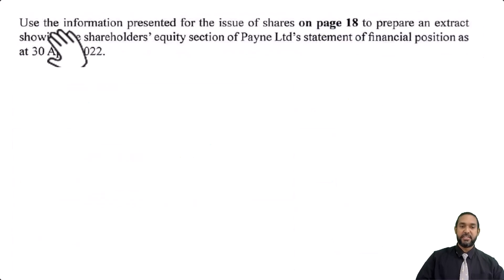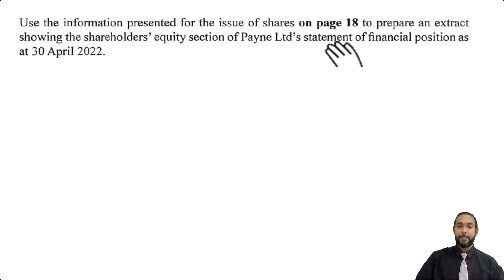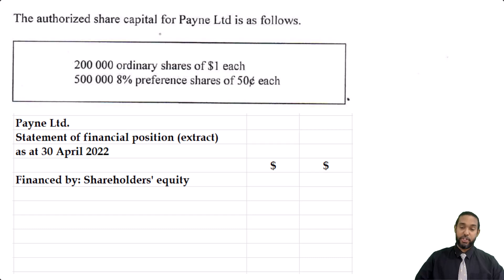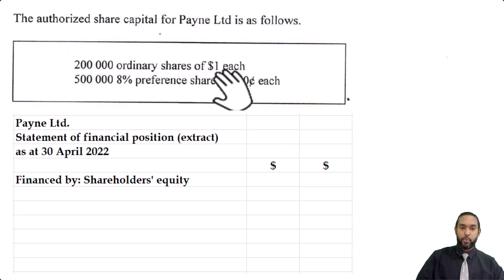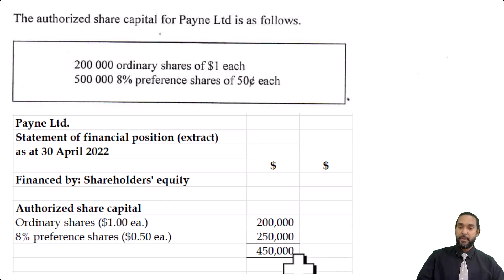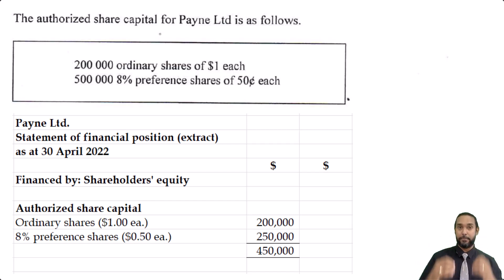Now let's look at the next part: prepare an extract showing the shareholders' equity — capital section — of Payne Limited's statement of financial position as at 30th April 2022. I've headed mine up with the entity name and statement name, shown as an extract at that date. I'm showing 'financed by shareholders' equity' — some people use 'capital and reserves,' that's also fine. I like to show the authorized share capital first: we were authorized to issue 200,000 $1 ordinary shares and 500,000 $0.50 preference shares, so I'll show those under authorized share capital with a subtotal. This is for informational purposes only and these figures are not added to anything else in the balance sheet — they just show the legal maximum.